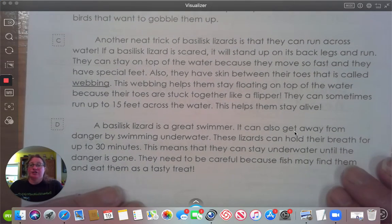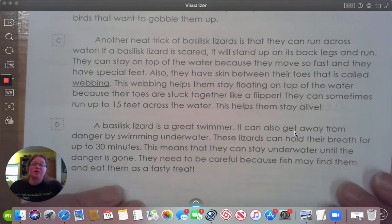Another neat trick of basilisk lizards is that they can run across water. If a basilisk lizard is scared, it will stand up on its back legs and run. They can stay on top of the water because they move so fast and they have special feet. Also, they have skin between their toes that is called webbing. This webbing helps them stay floating on top of the water because their toes are stuck together like a flipper. They can sometimes run up to 15 feet across the water. This helps them stay alive.